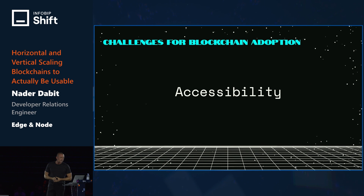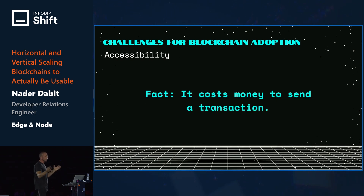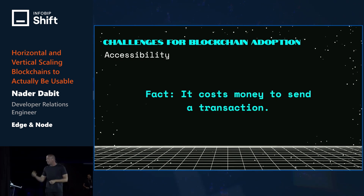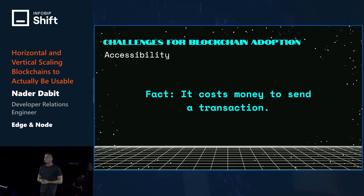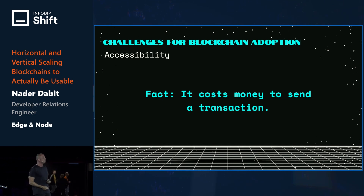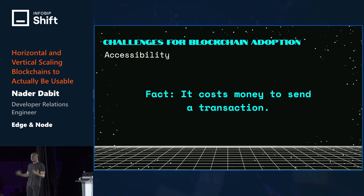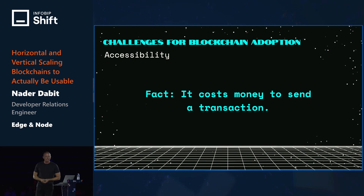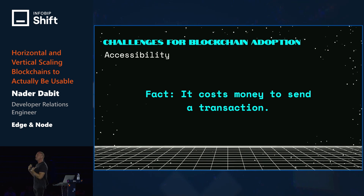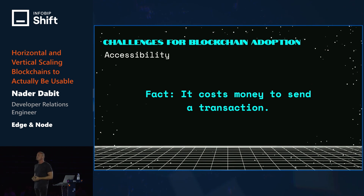Another big challenge is accessibility. It actually costs money to interact with a blockchain application — that's kind of absurd. Imagine going to Twitter, Facebook, Instagram, or TikTok and every time you wanted to like something, post something, or create a profile, you had to pay money. That's not realistic. Most of the time people barely want to use a new application; they have to be begged to use it, much less pay for it.